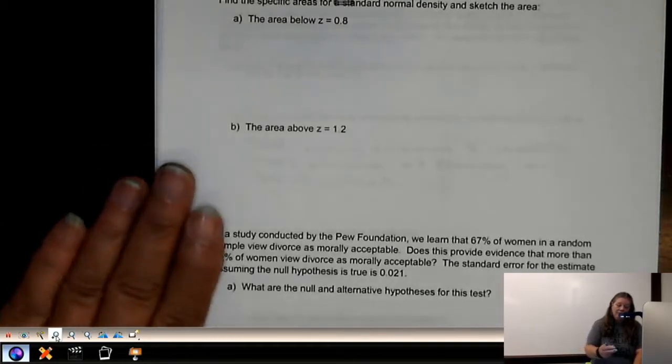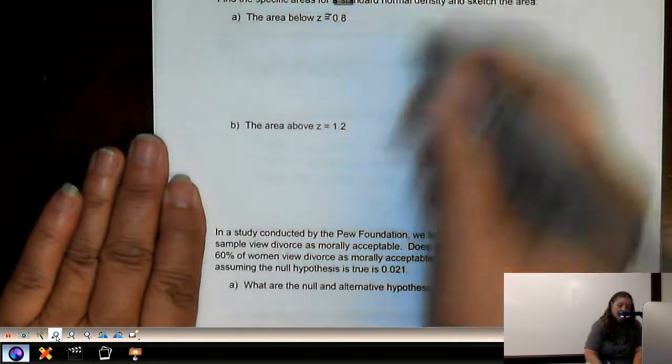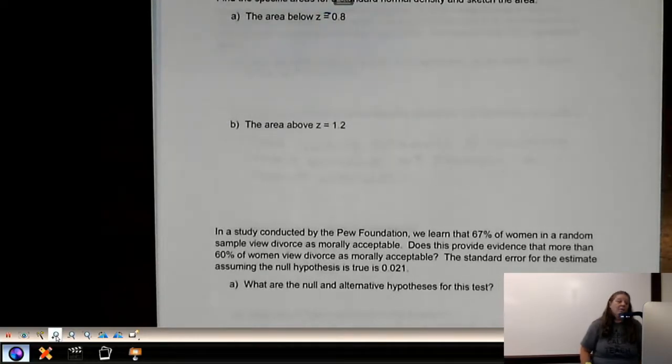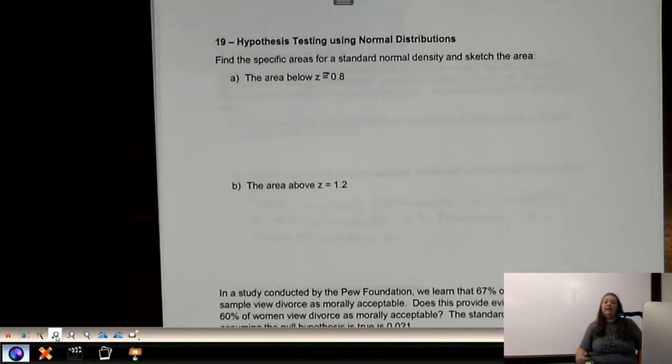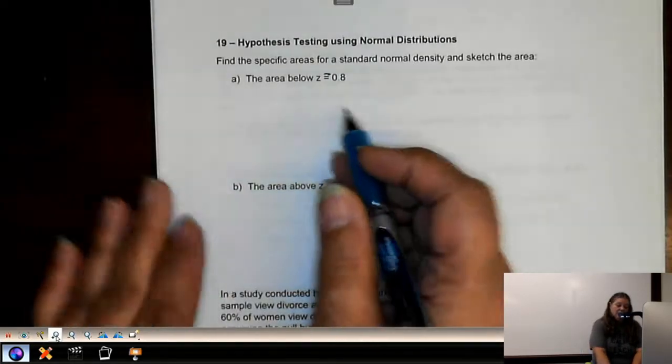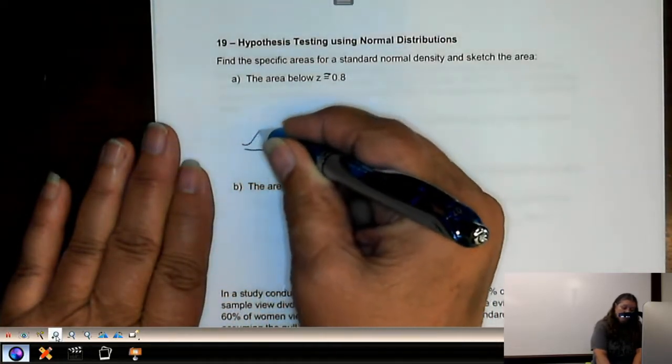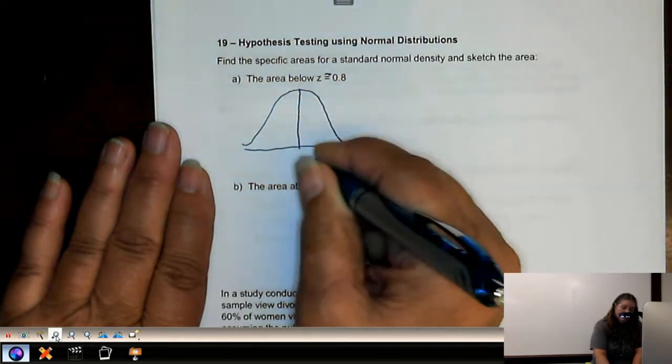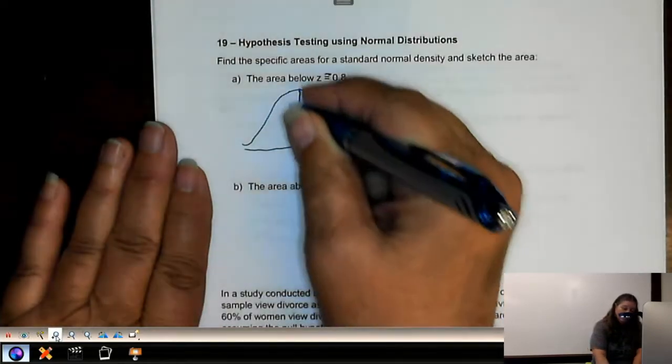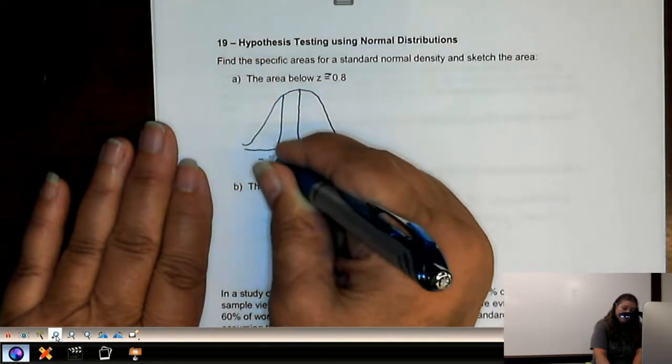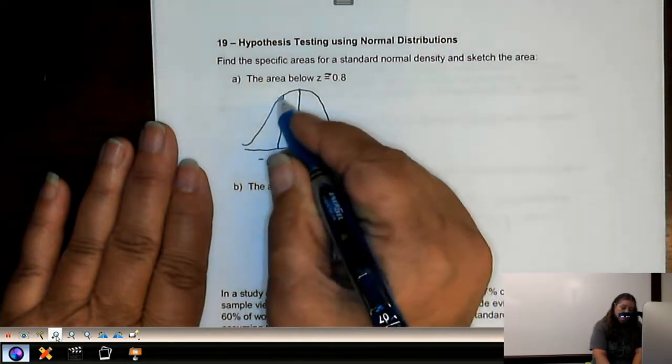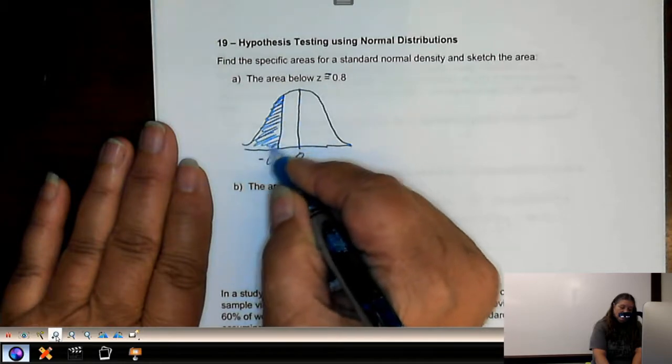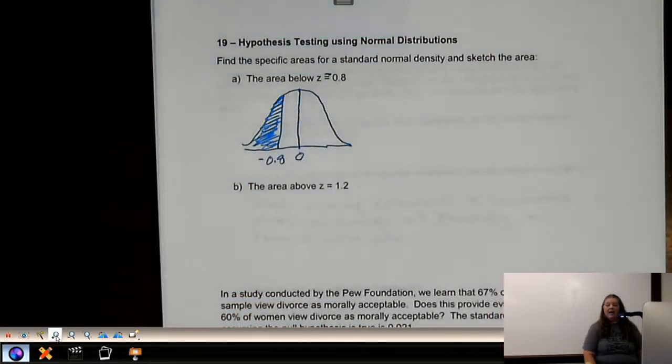So we have two different possibilities. Either it's below a negative value or it's above a positive value, because our p-values will either be negative or positive. So we're going to work with the normal distribution the way we would for finding a p-value. So the area below a negative 0.8. So we have our normal distribution, and 0 is in the middle. So negative 0.8 is going to be someplace to the left of 0. So the area in which we're interested is this shaded area, everything below negative 0.8.